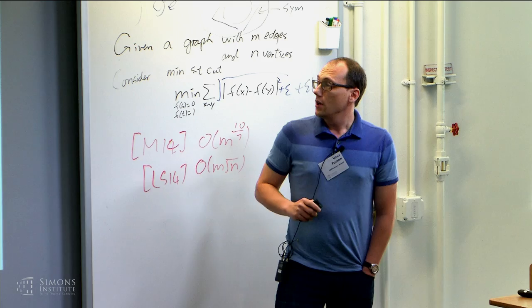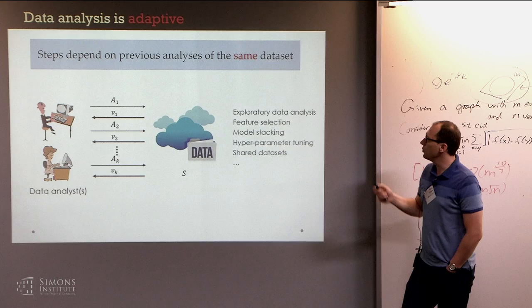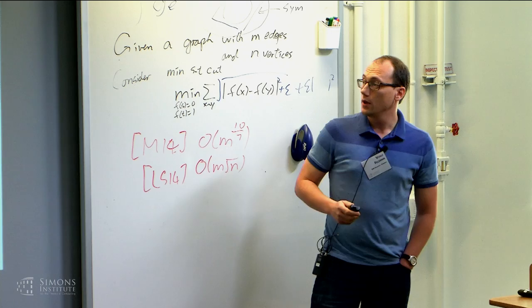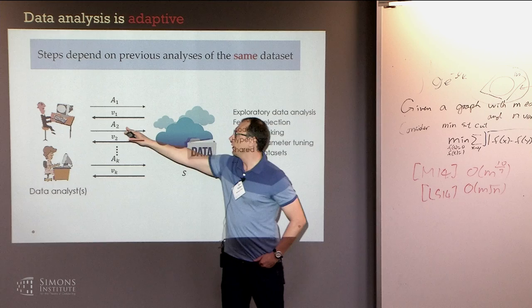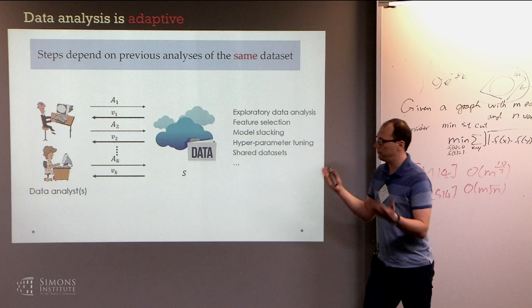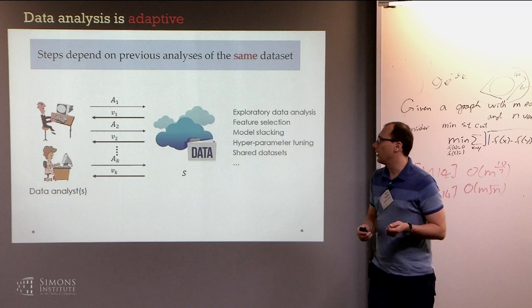Some examples of procedures that often result in this kind of reuse are exploratory data analysis, feature selection, model stacking, hyperparameter tuning, and also sharing datasets between different analysts. Starting from the second analysis, the analysis we perform ends up being dependent on the data, so the basic IID assumption underlying our theoretical guarantees no longer holds.